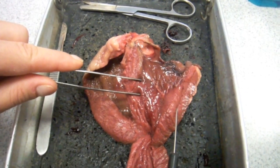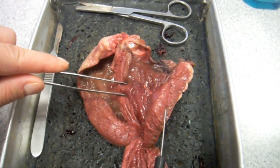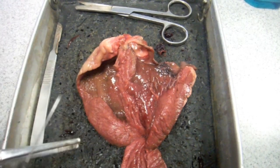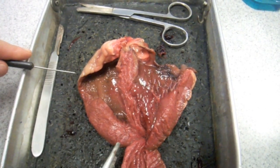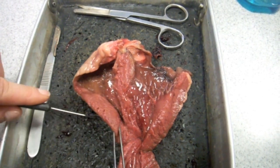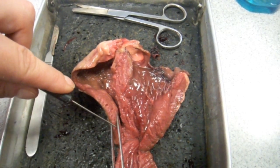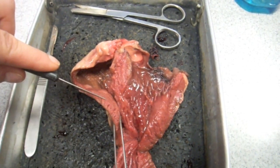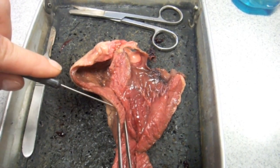In this heart dissection, I'm pointing to the wall of the left ventricle, and you can see that it's incredibly thick. Compare this with the thickness of the right ventricle wall, which is much thinner. This is because the right ventricle only needs to pump blood to the lungs, but the left ventricle has to pump blood to the rest of the body, so you need a lot of muscle.